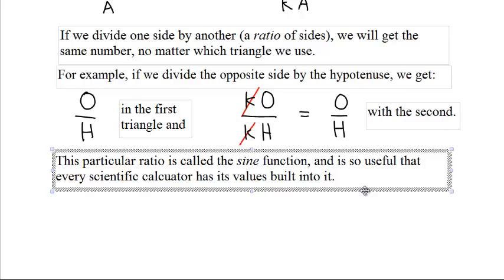This particular ratio, opposite over hypotenuse, is called the sine function, and it's so useful that your calculator has built into it all the sine values.